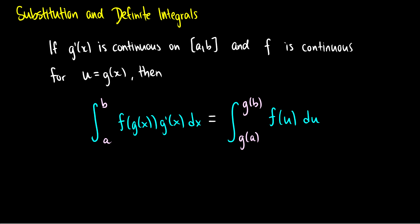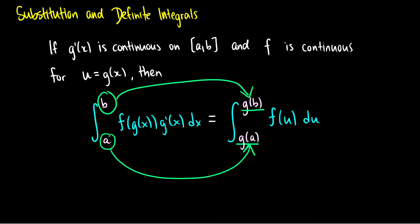If g prime of x is continuous on some interval [a, b], and f is continuous for u equals g of x, then the integral from a to b of f(g(x))·g'(x) dx is equal to the integral from g(a) to g(b) of f(u) du. So what this means is that if we substitute u equals g(x), we have to take our limits of integration and also put them through the same function u equals g(x), because we now have different equations in terms of different variables — therefore our limits should also change.